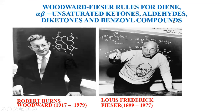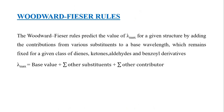In today's video, we are going to be talking about the Woodward-Fisher rule. This is Woodward and this is Fisher — they were brilliant professors. The rule predicts the value of lambda max for a given structure by adding contributions from various substituents to a base value — the base value for a given chromophore, which could be a diene, a ketone, a diketone, an aldehyde, or a benzoyl group. Each of these compounds has a particular base value for their chromophore.